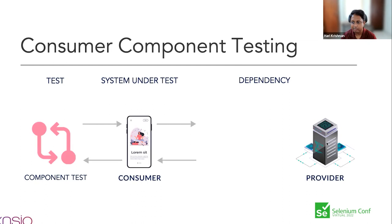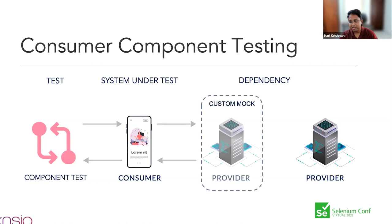How does consumer component testing look? Any test has three parts: the test, the system under test, and the dependency. A good component test ideally isolates the dependency — in this case, the real backend application. We don't want to talk to the real application in a staging or production environment; it's messy to go across the network, and getting the provider running locally may or may not be possible depending on how complex the stack is.